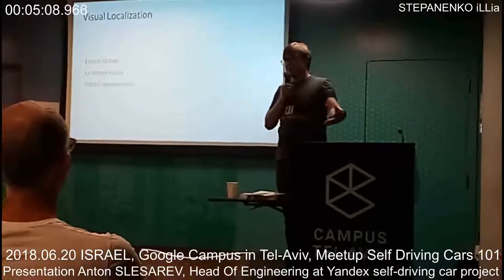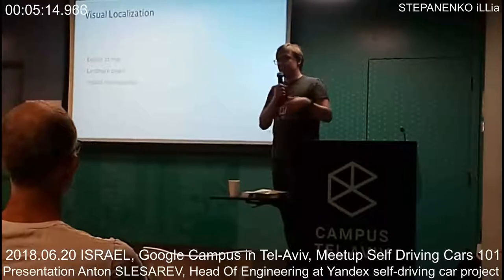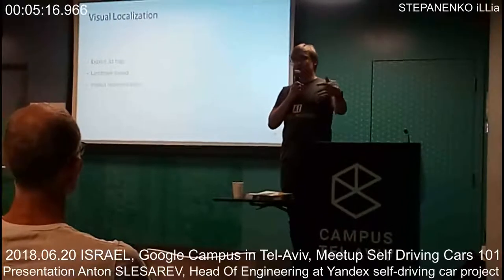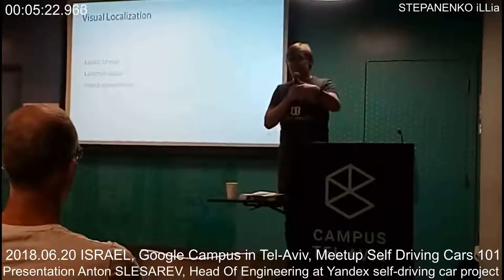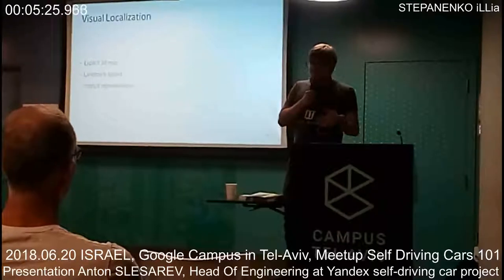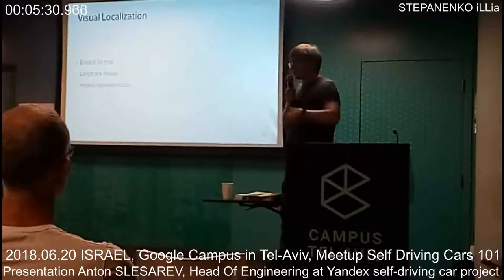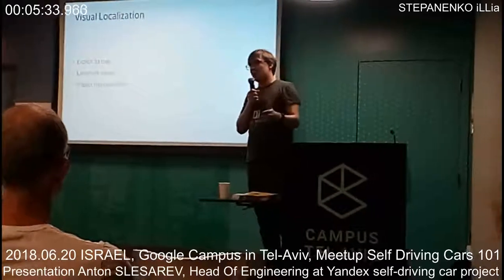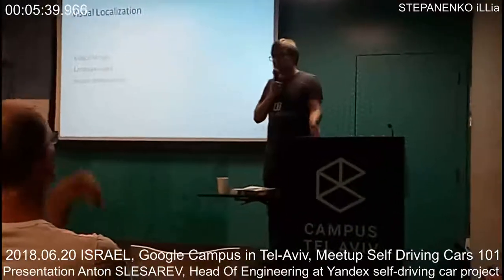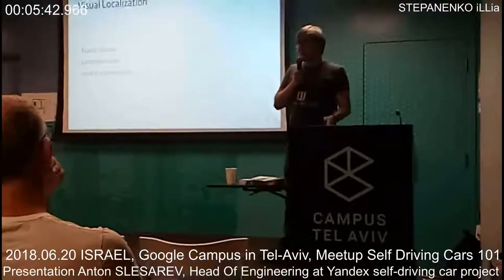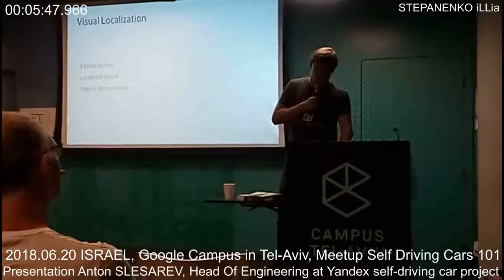We need to use external information — and how do people localize themselves? They remember a place and analyze what they see. We can do exactly the same with algorithms. The question is how to represent a map, how to represent the environment. We can represent an environment in different ways: explicit 3D representation, landmark-based localization, or implicit representation of the environment.